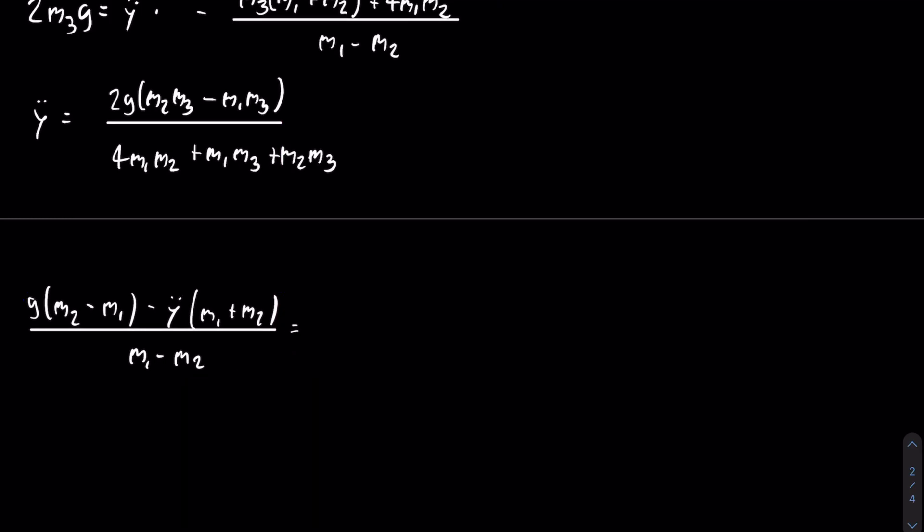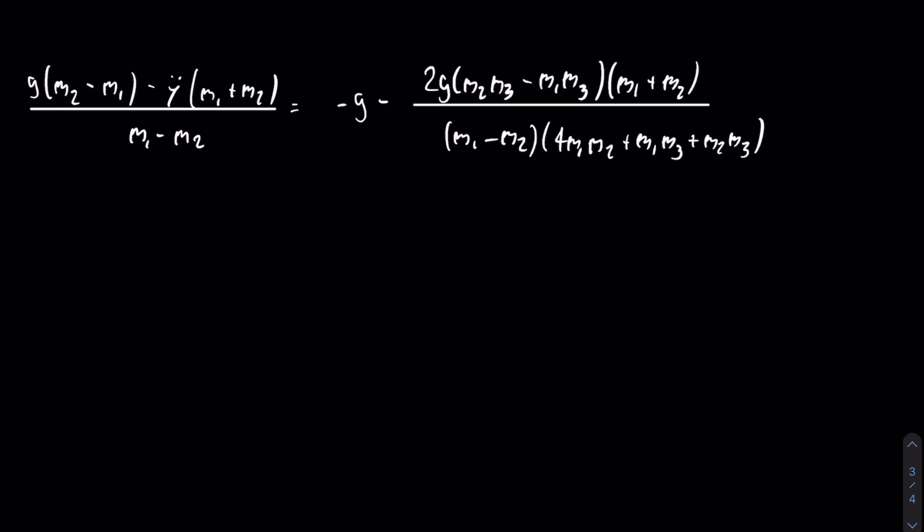And again, like before, I could show exactly how I substituted y double dot into this equation and then simplified everything, but then that would just make the video too long. So it did take me two steps to get it to the fully simplified version, and I'm just going to show those two steps. And my final equation for x double dot looks like this.